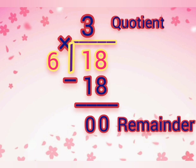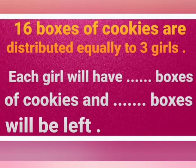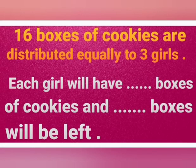So the quotient is 3 and the remainder is 0. Now let's solve this exercise.